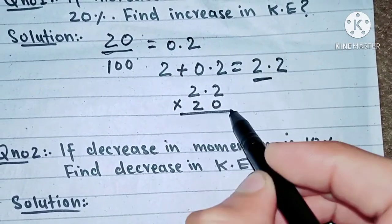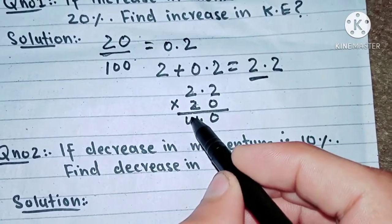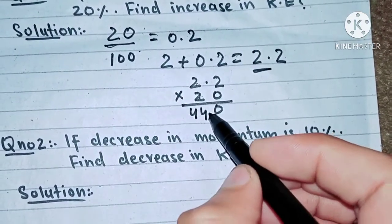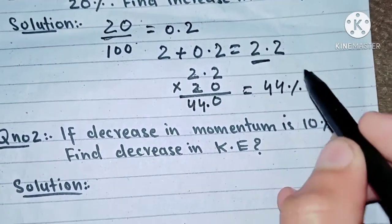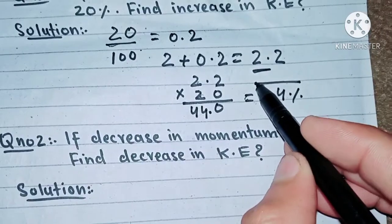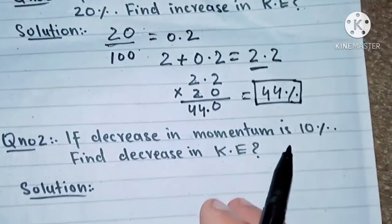And you will get 2.4, and finally we get 44 percent. It means that the percentage increase in kinetic energy is 44 percent. So this is a very easy way of finding.